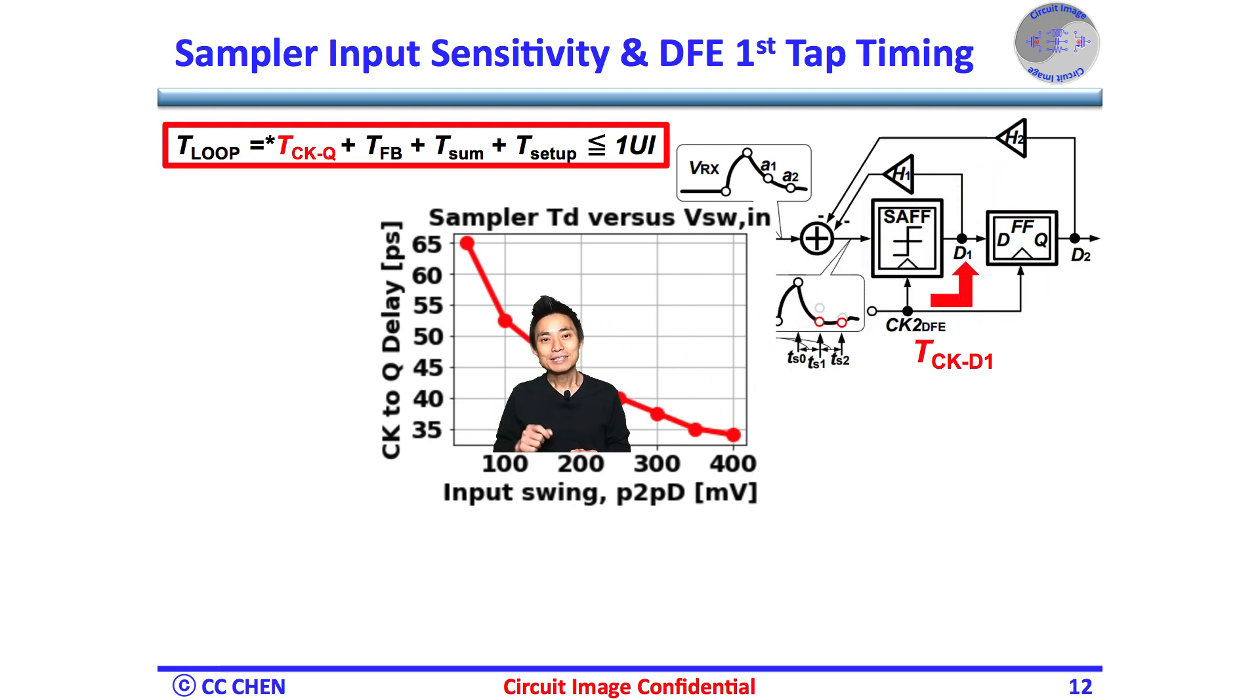In other words, the sampler's clock-to-Q delay would decrease if the input swing is increased and vice versa. Therefore, a simple delay image versus the input swing might not only tell you the bigger input swing may take a shorter time to reach the full swing at the output, but also show the maximum data rate from the eye height budget.